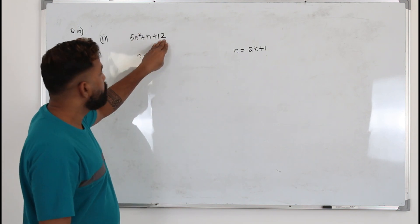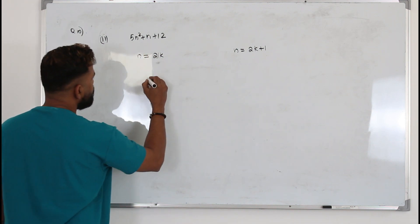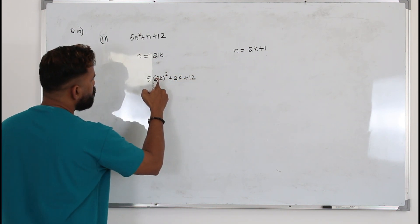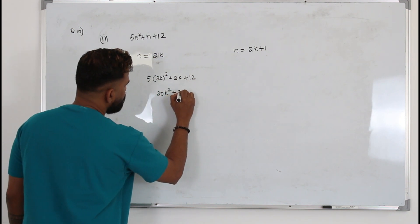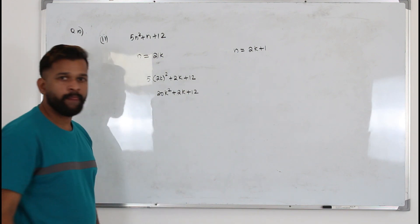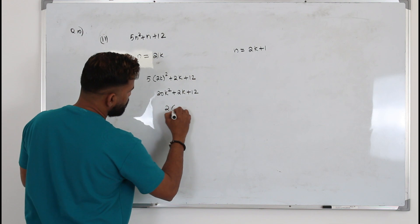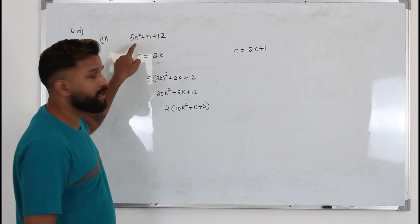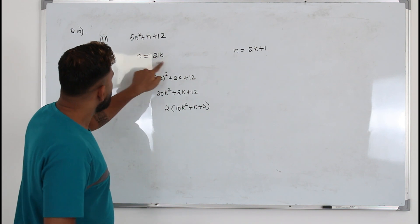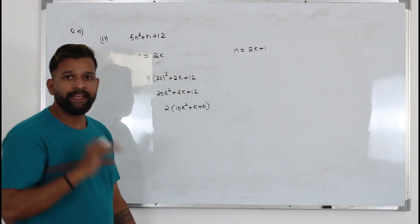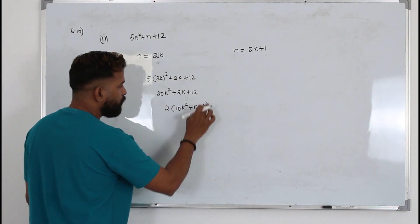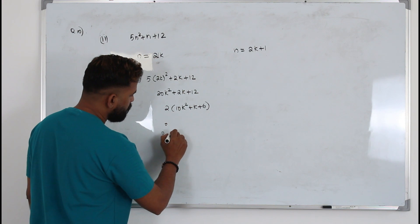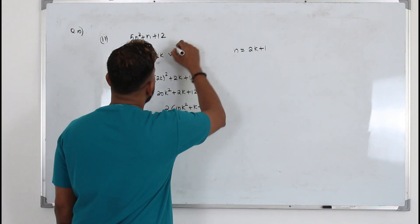So now we put 2k here: 5 times 2k squared plus 2k plus 12. You get 5 times 4k squared, which is 20k squared plus 2k plus 12. So if you take 2 as a common factor here, you get 2 times (10k squared plus k plus 6). If you can write a given expression in this form, 2 times something, that will definitely give you an even number, because no matter whatever value you get here, you are going to multiply by 2. So this is definitely even. Therefore, it's an even number.